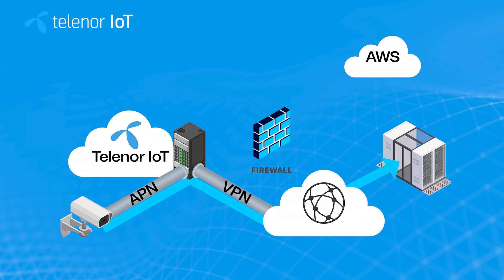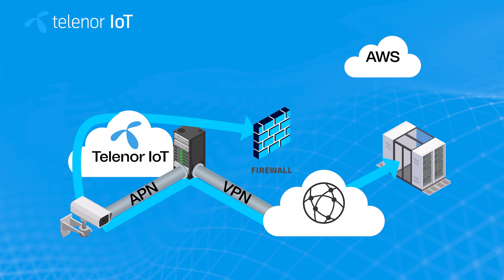The second part demands that we break out the traffic for the firmware update to the cloud service. Internet breakout is used for this so that the camera's request for new firmware gets access to the cloud service through internet.